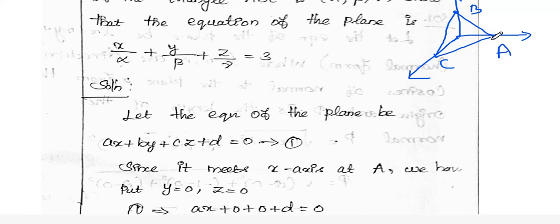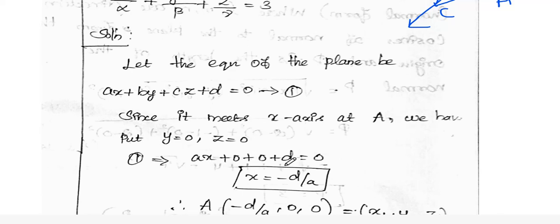The general form of the equation of a plane is ax + by + cz + d = 0. Since the plane meets the x-axis at A, we set y = 0 and z = 0, giving ax + d = 0, so x = -d/a. Therefore the point A is (-d/a, 0, 0).